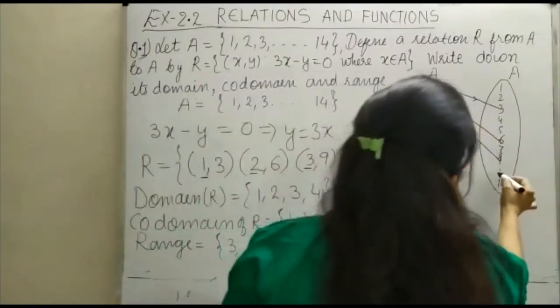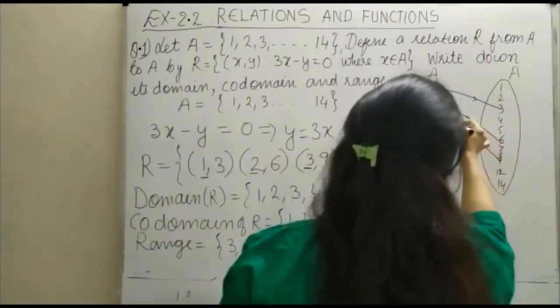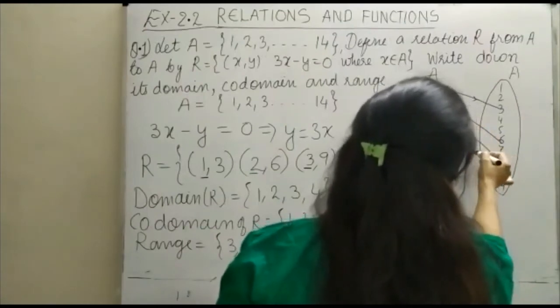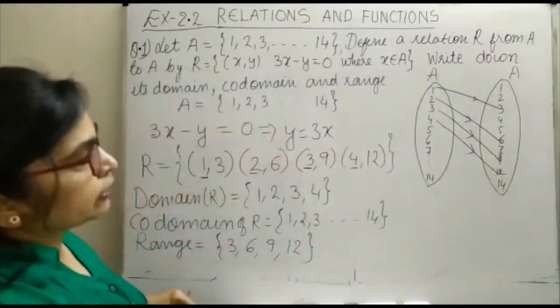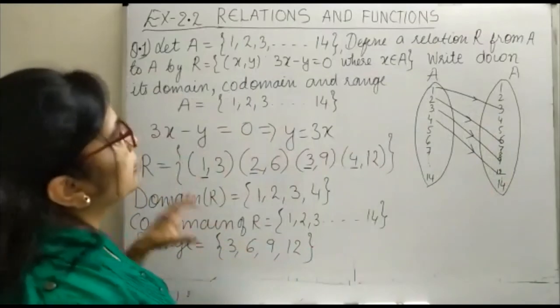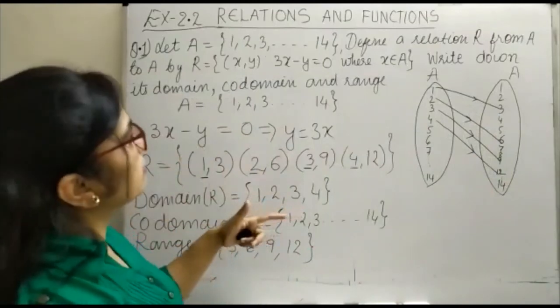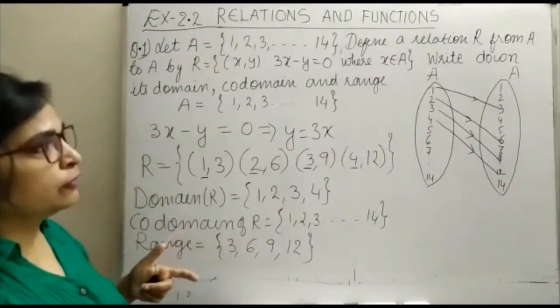Now, 4 with 12. So, somewhere 12 will come here. So, this is 4 with 12. This is how we work out for the relation arrow diagram. And you can do it in following way.